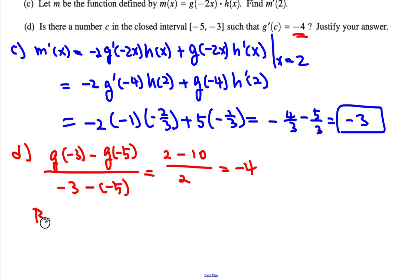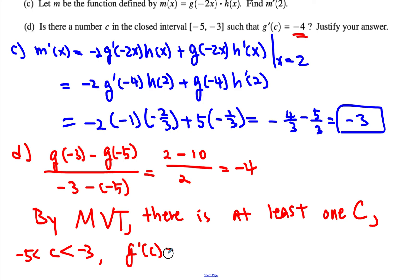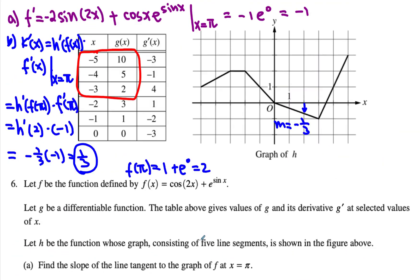So we get to realize that by mean value theorem, there is at least one c where negative five is less than c less than negative three, where g prime of c is equal to negative four, same as what's given here.